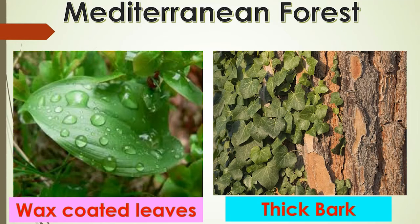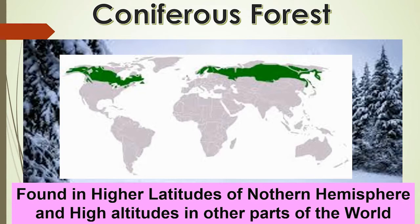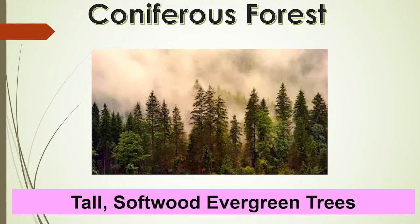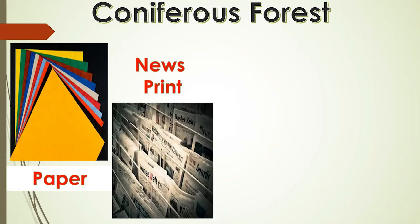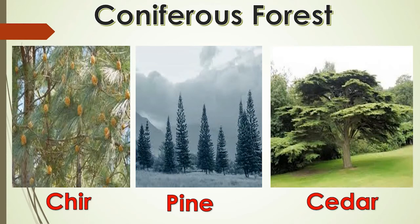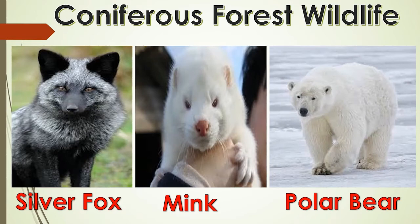Coniferous forests are found in the higher latitudes of the northern hemisphere and also at higher altitudes in areas like the Himalayas. They are also called taiga. Trees of these forests are tall, softwood, evergreen trees. The wood is very useful for making pulp, which is used for manufacturing paper, newsprint, matchboxes and packing boxes. Fir, pine and cedar are important tree varieties here. Animals like silver fox, mink and polar bear are commonly found here.